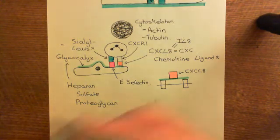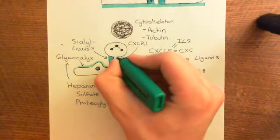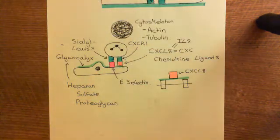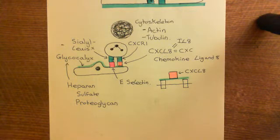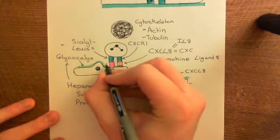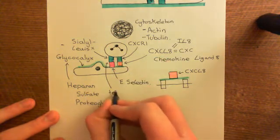Okay, so let's color this in in turquoise. So, what will happen is, again, the E-selectin and the sialyl-Lewis-X will form a quite weak adhesion. And that's known as tethering of the neutrophil to the endothelial cell.